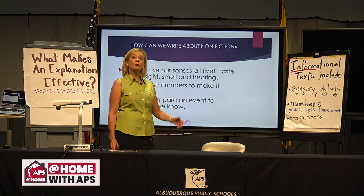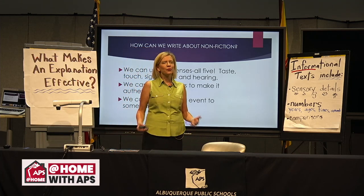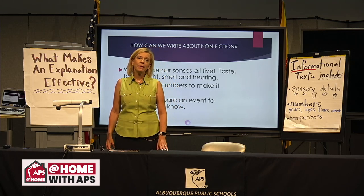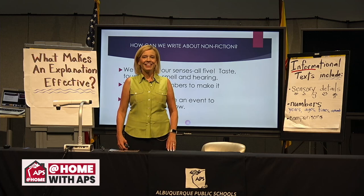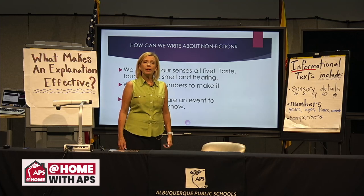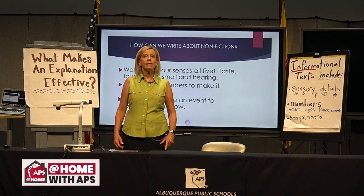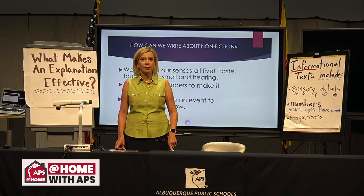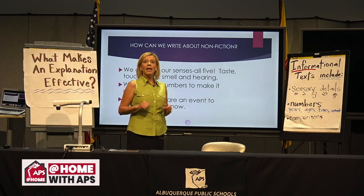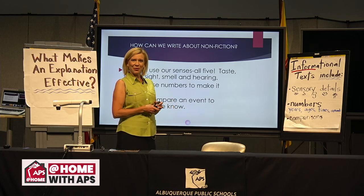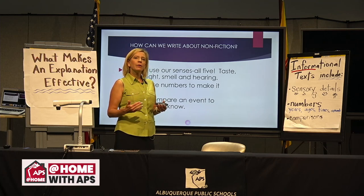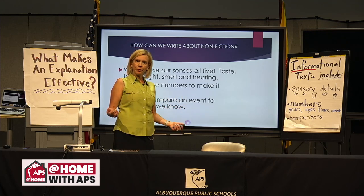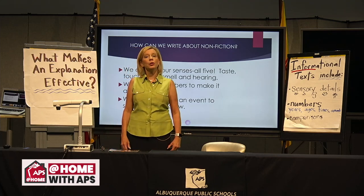We looked at informational texts through different lenses. On Monday, we practiced using your senses — your powers of observation — to go out into the world and explore. With Miss Abby, you explored the sunflower and wrote about it using your five senses. Yesterday, we read a story about a Navajo code talker and looked at that story through the lens of numbers — how we can understand and write about nonfiction using numbers.